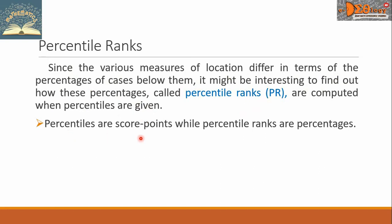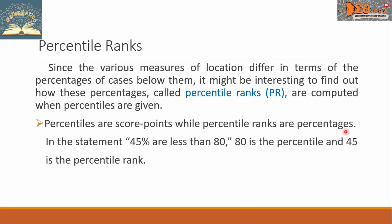Percentiles are score points, while percentile ranks are percentages. In the statement, 45% are less than 80, 80 is the percentile, and 45 is the percentile rank.